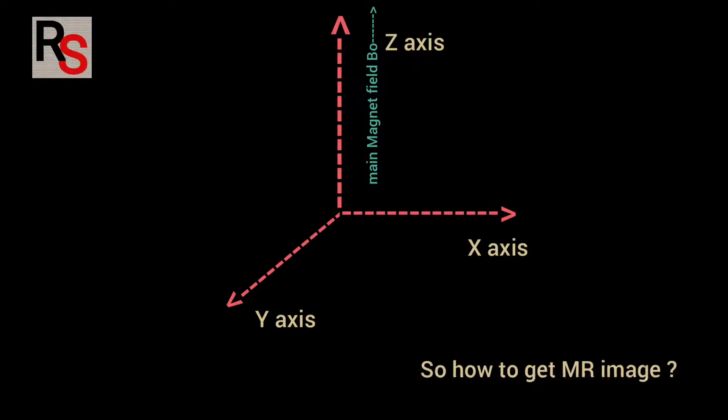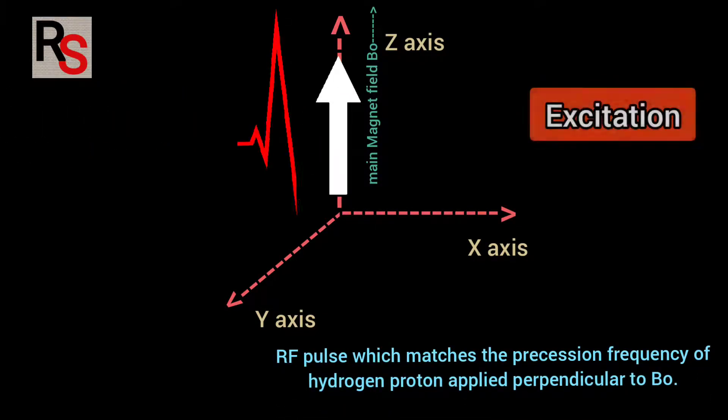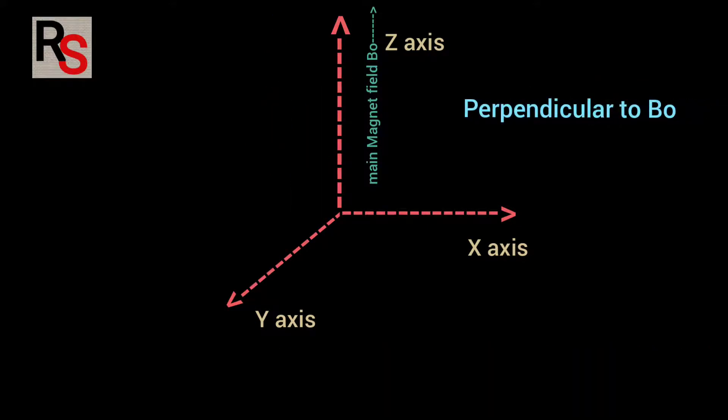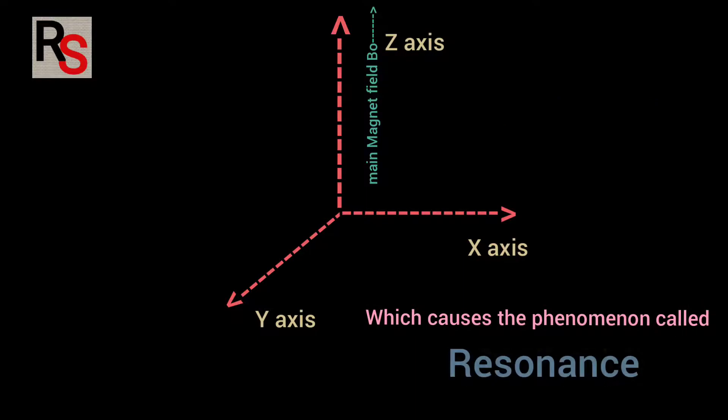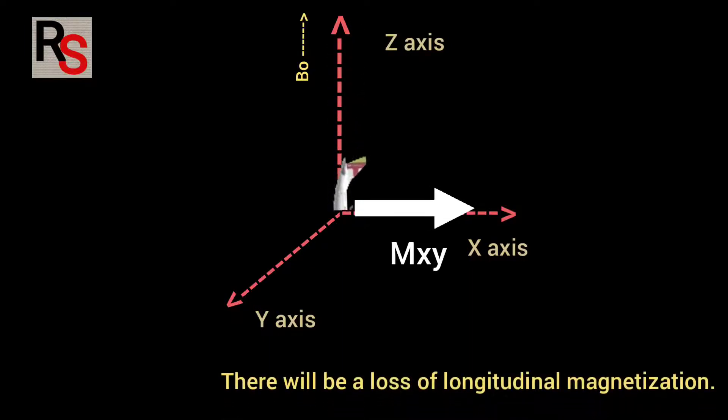To get MR image radio frequency pulse which matches the precession frequency of hydrogen proton is applied perpendicular to the main magnetic field B0 which causes a phenomena called resonance and absorption of energy take place which flips the longitudinal magnetization vector MZ in the direction of XY plane and there will be a loss of longitudinal magnetization.